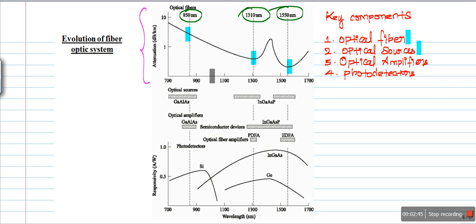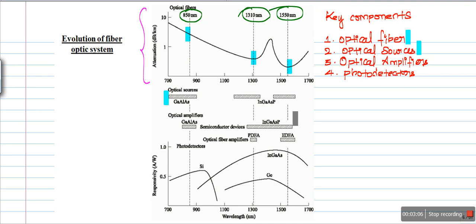The second key component is optical sources. When we talk about optical sources, we consider the material chosen to emit light. Initially, for the 850 nanometer window, the material used to generate the light signal was gallium aluminum arsenide. In the second and third windows, the material used is indium gallium arsenide phosphide.